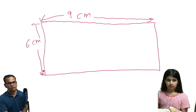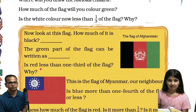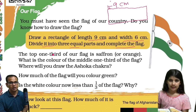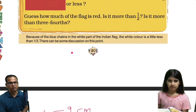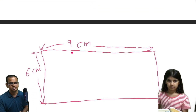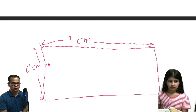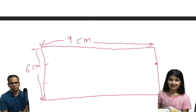You have to speak a little louder. Okay, this is a rectangle. Now divide it into 3 equal parts and complete the flag. Let's do 3 equal parts, Avisha — this and this, and this one.